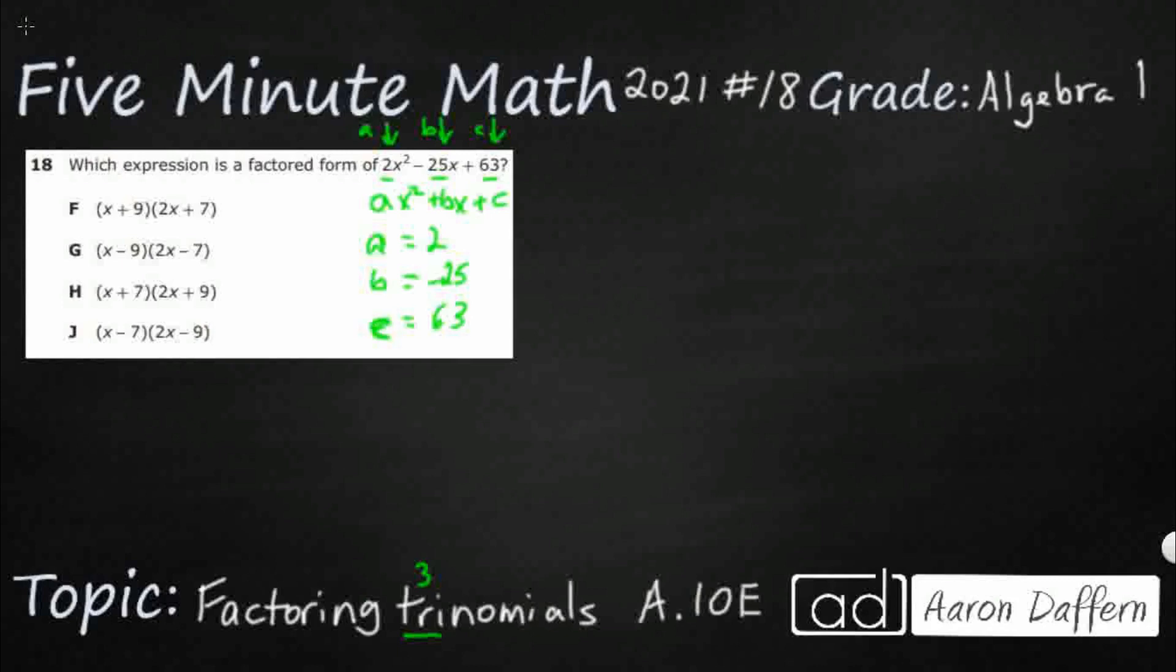Alright so let's use the diamond method here. It's not the only way to solve it but it's a highly effective and efficient algorithm. In the top portion we take our a term and our c term and we multiply them. So 2 times 63 is going to be 126. And then my b term here is going to be negative 25.